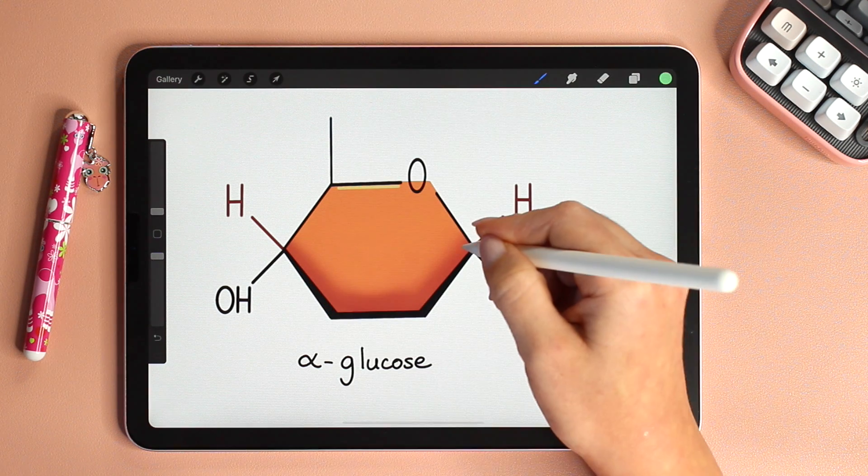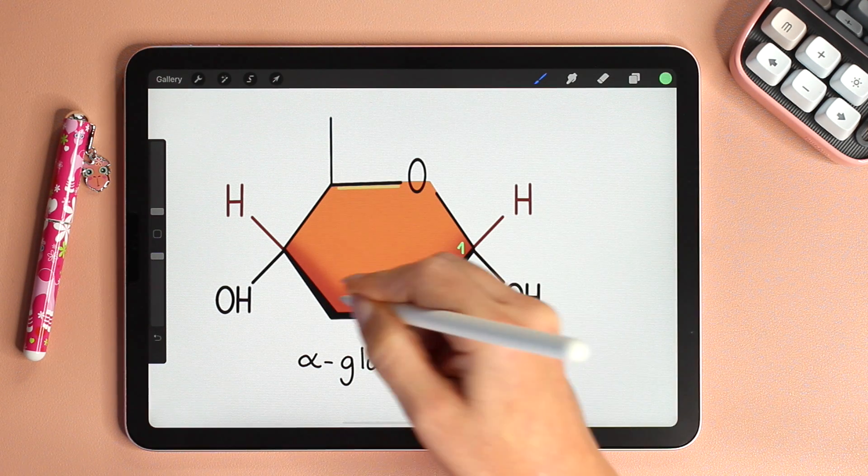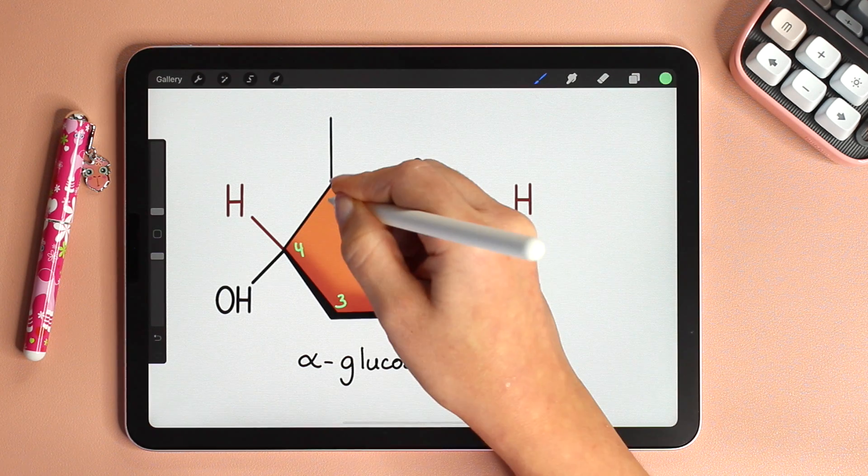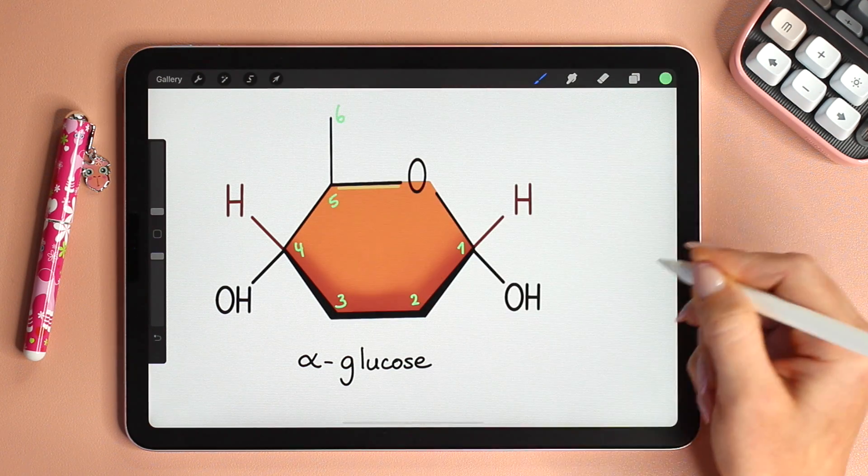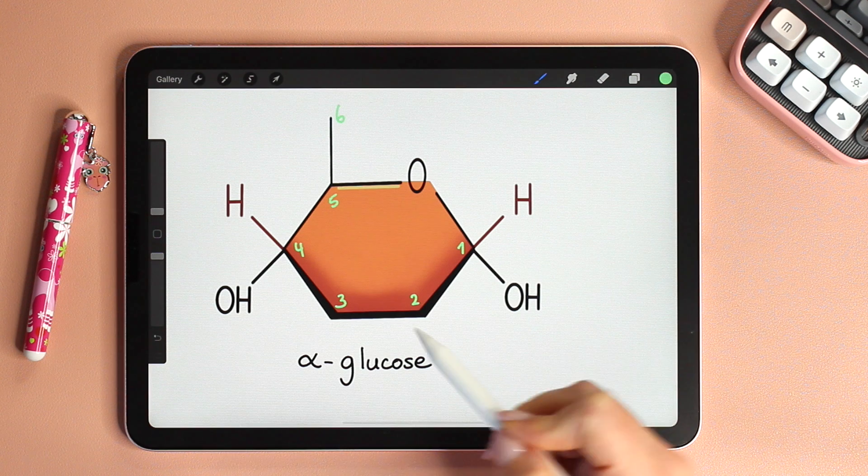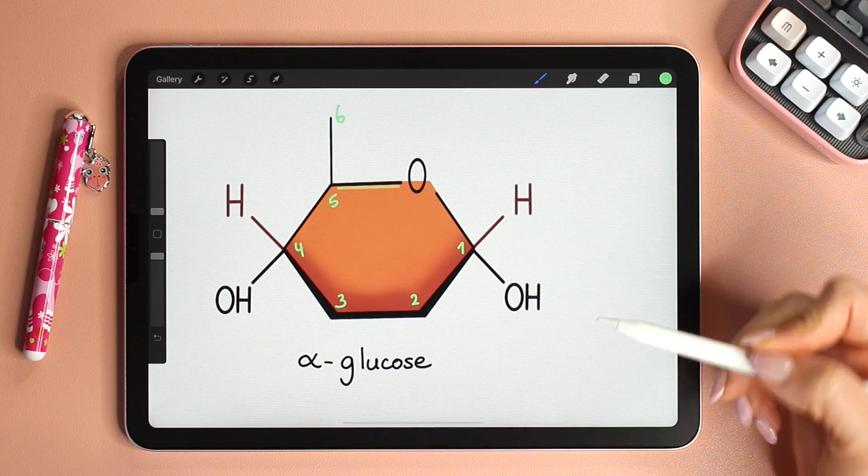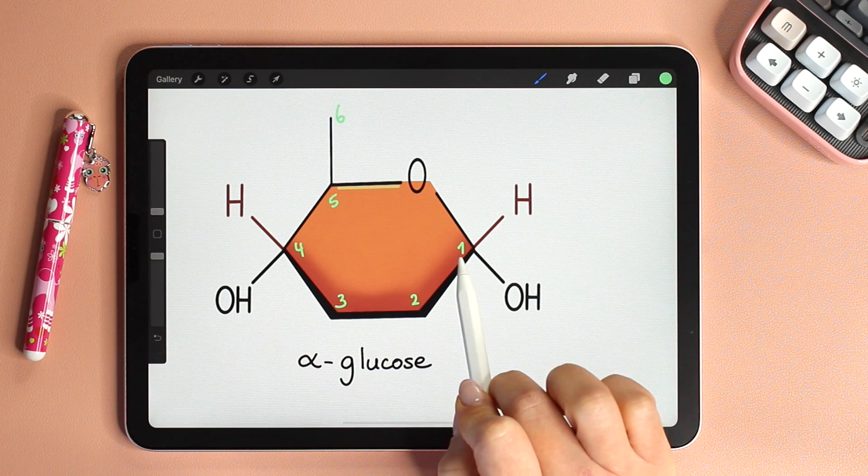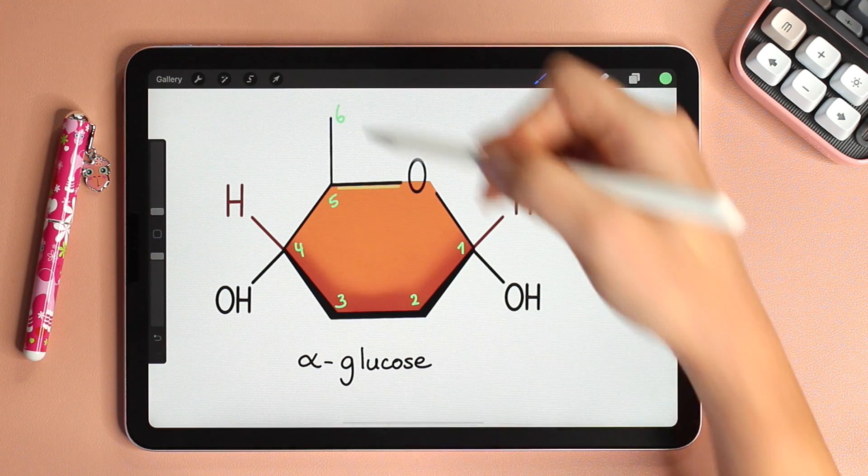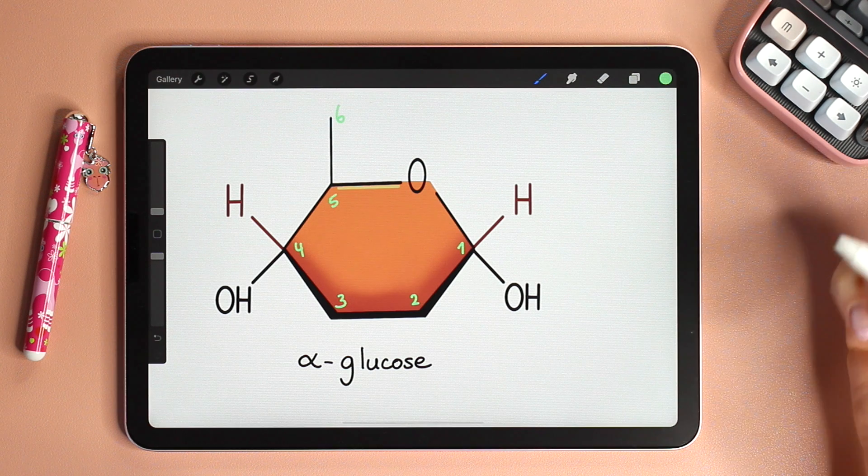It's a 6 carbon sugar. This is carbon number 1, 2, 3, 4, 5, and carbon number 6 is outside the ring. Carbons number 2 and 3 also have a hydrogen and hydroxyl group but for now we only care about carbons number 1 and 4. Carbon number 6 is also important for branching.